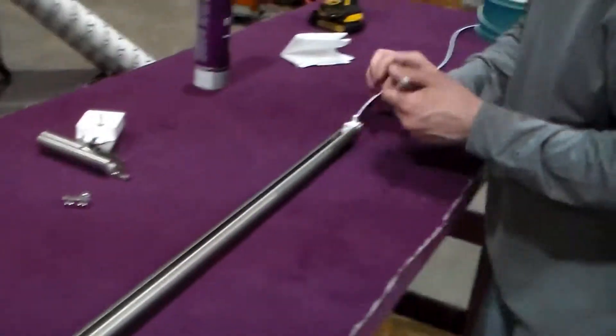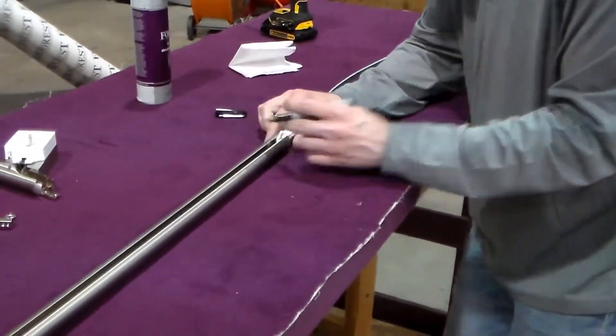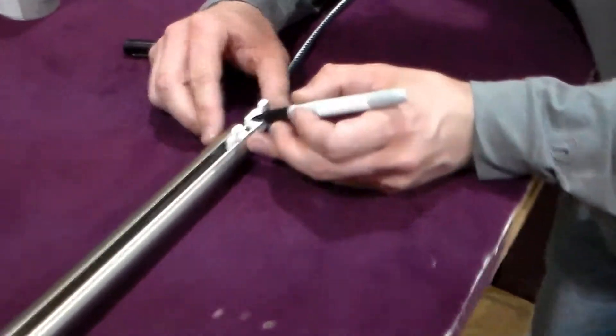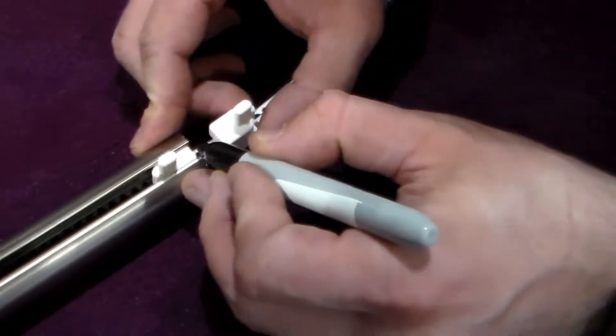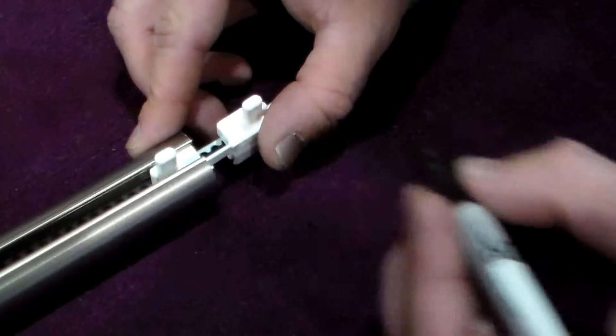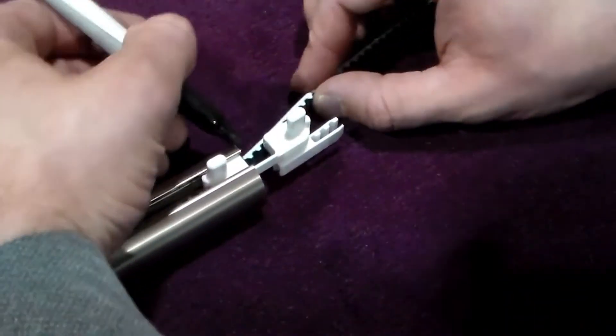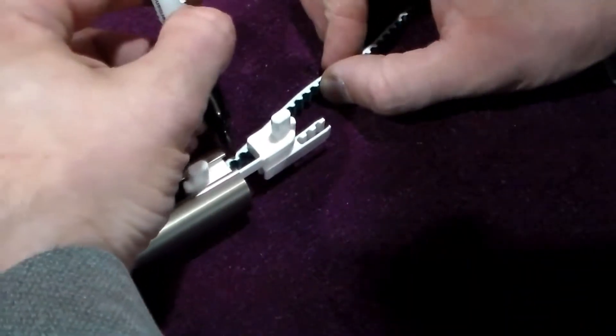Now line up the edge of your belt connector with the edge of the track. So this edge right here is flush with the edge of your track, and from there you'll count the 45 teeth.